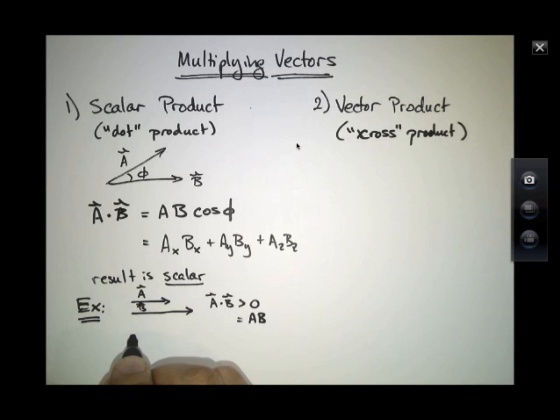But notice if this was A and this was B, in this case A dot B would equal minus the product of the magnitudes. This would be less than zero.